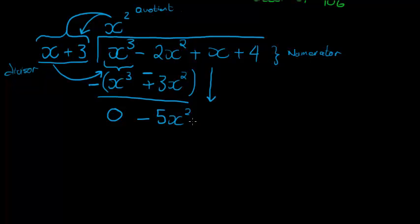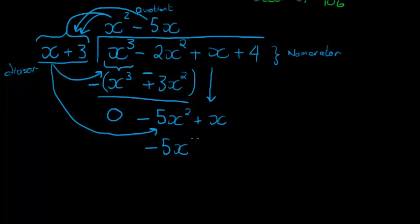So, what do I do? I bring down, not my next digit, but my next term. My next term is a +x. Go through the same process. x divides into -5x² minus 5x time. Multiply the -5x back, and I get -5x². And -5x times positive 3 gives me negative 15x.